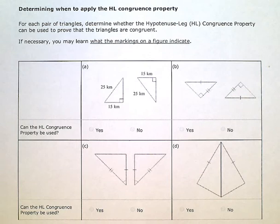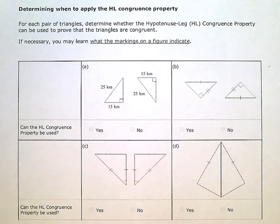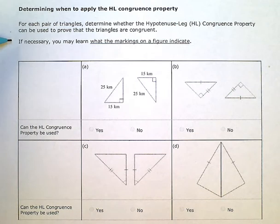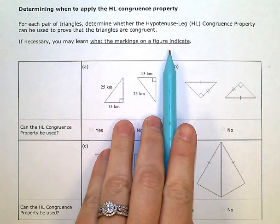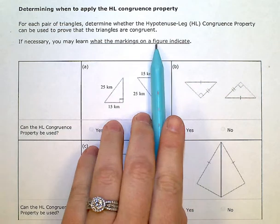Determining when to apply the HL congruence property. For each pair of triangles, determine whether the hypotenuse leg or HL congruence property can be used to prove that the triangles are congruent. If necessary, you may learn what the markings on a figure indicate — you can click on that link in this problem.